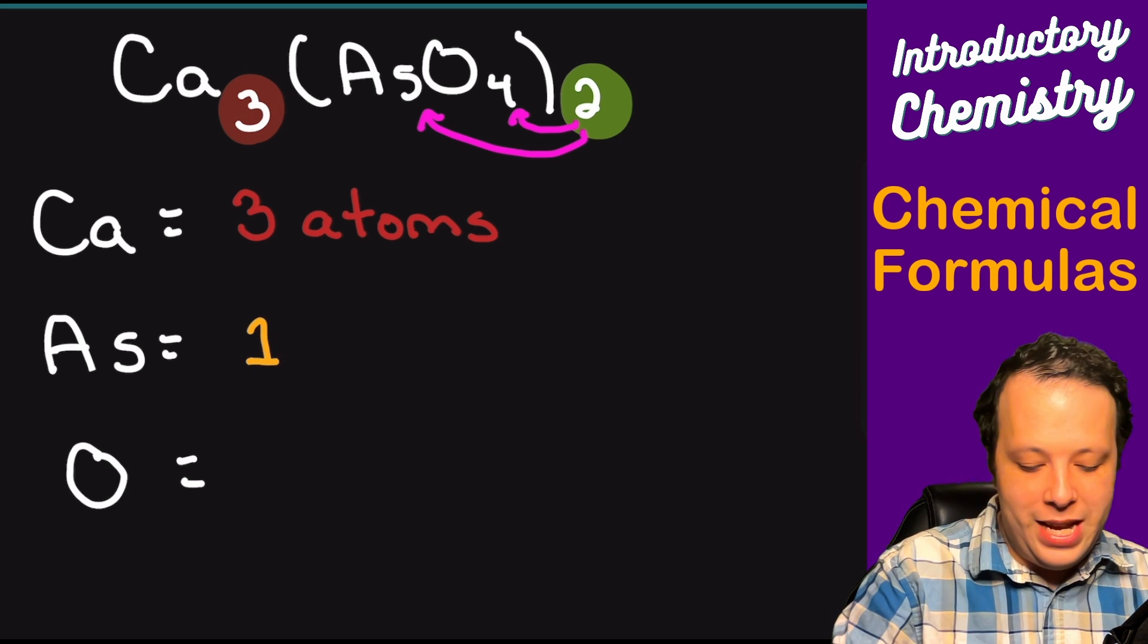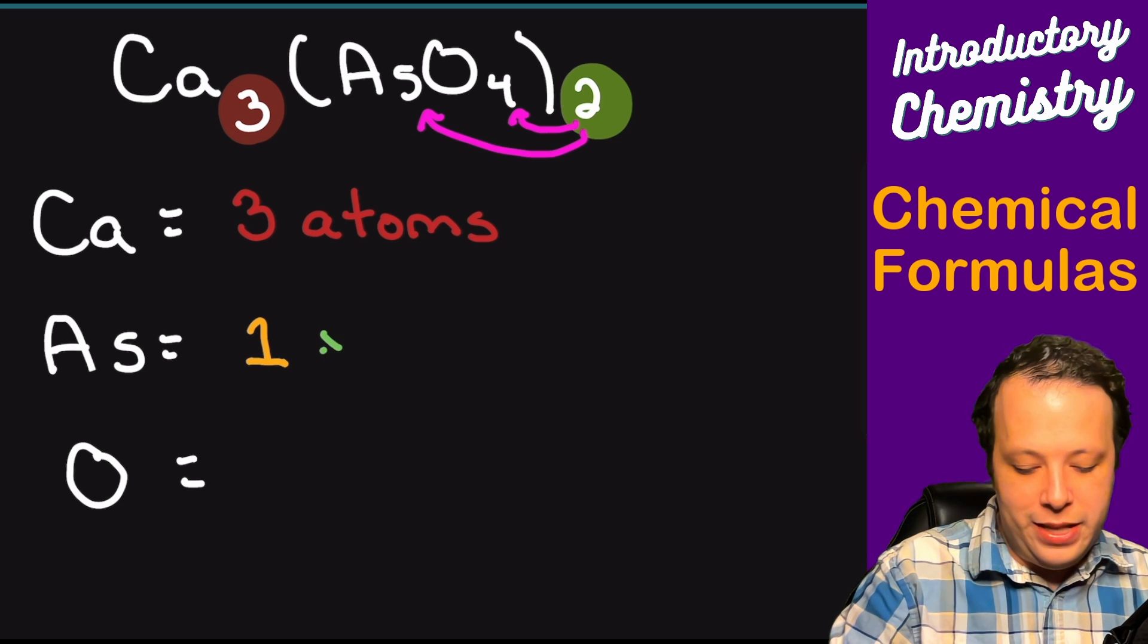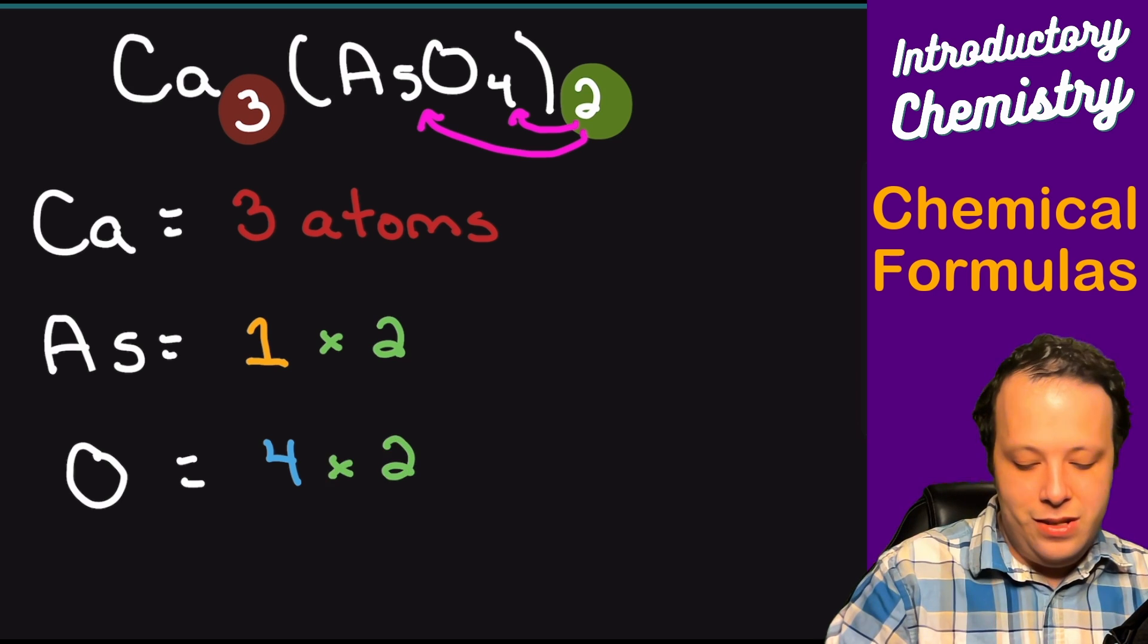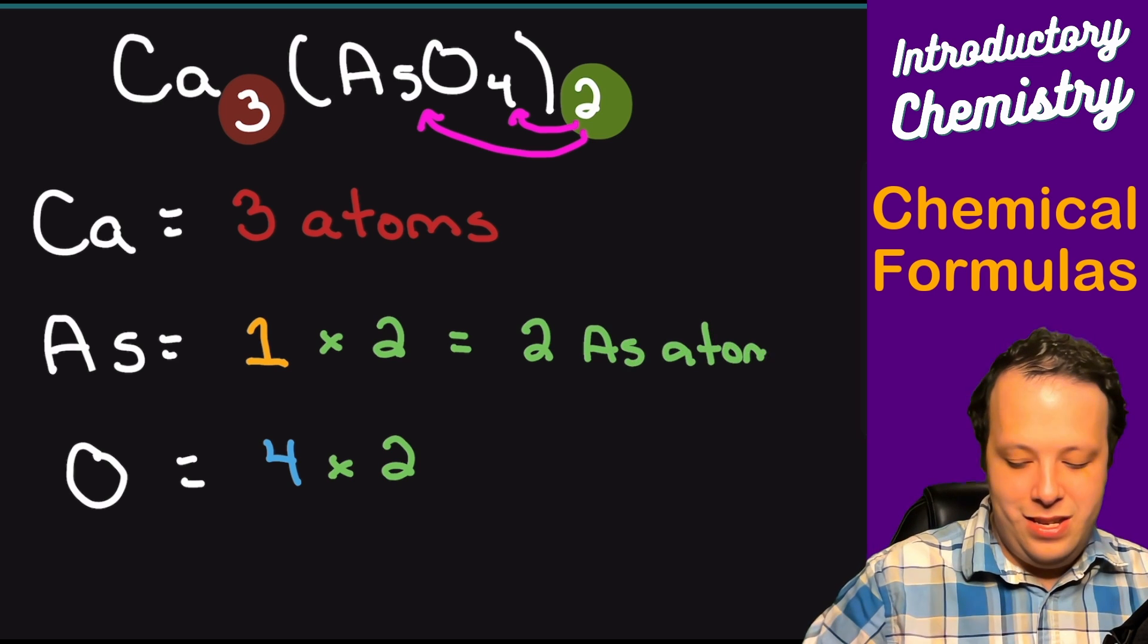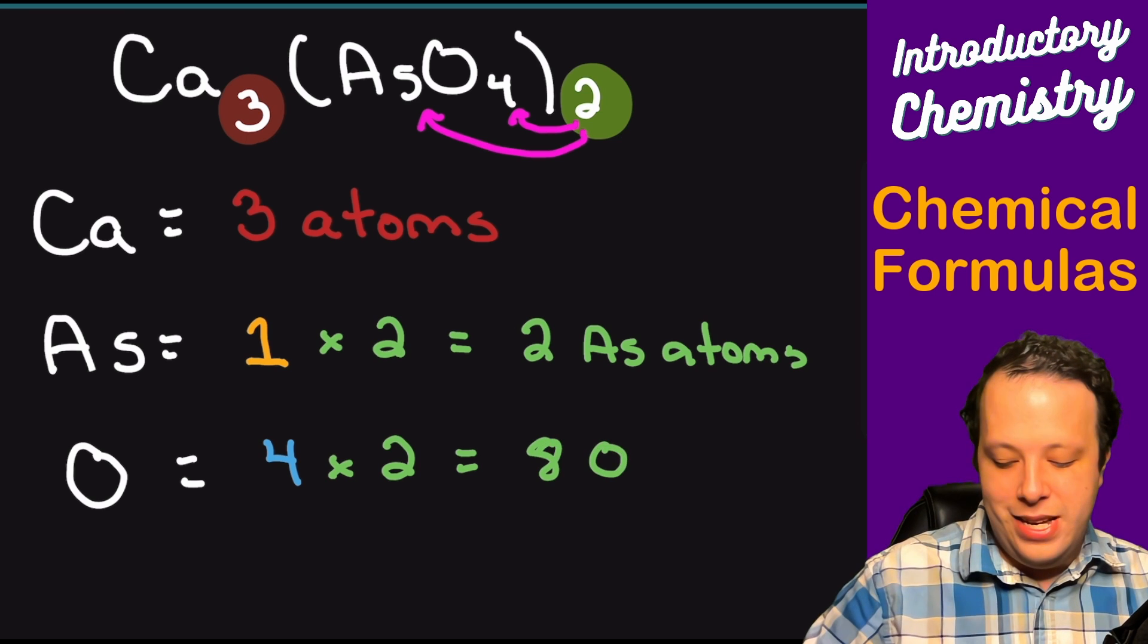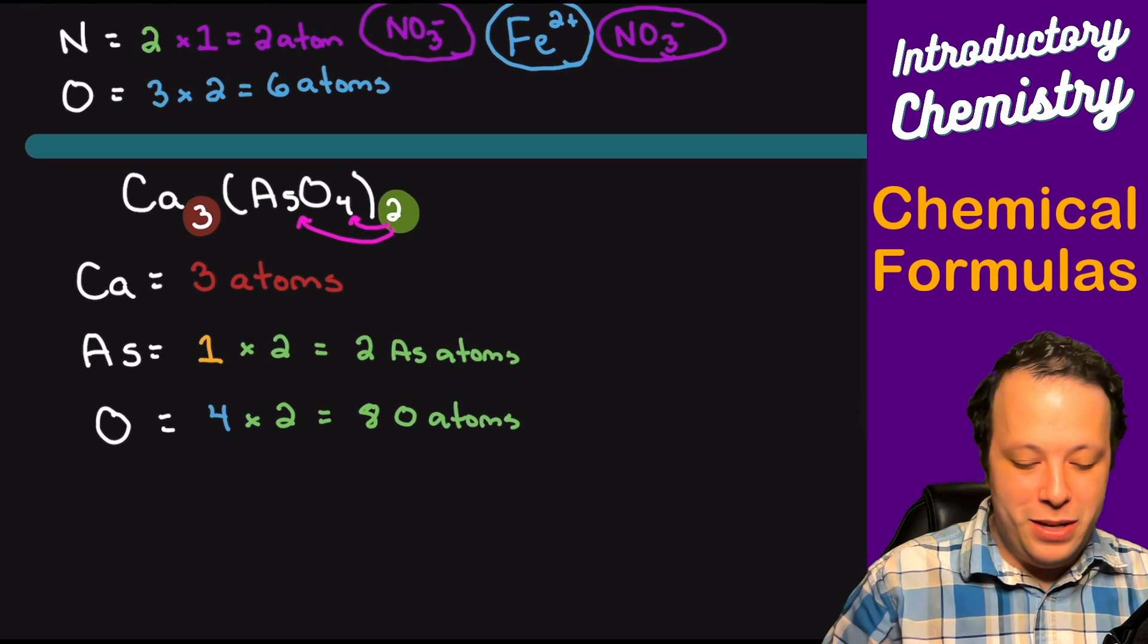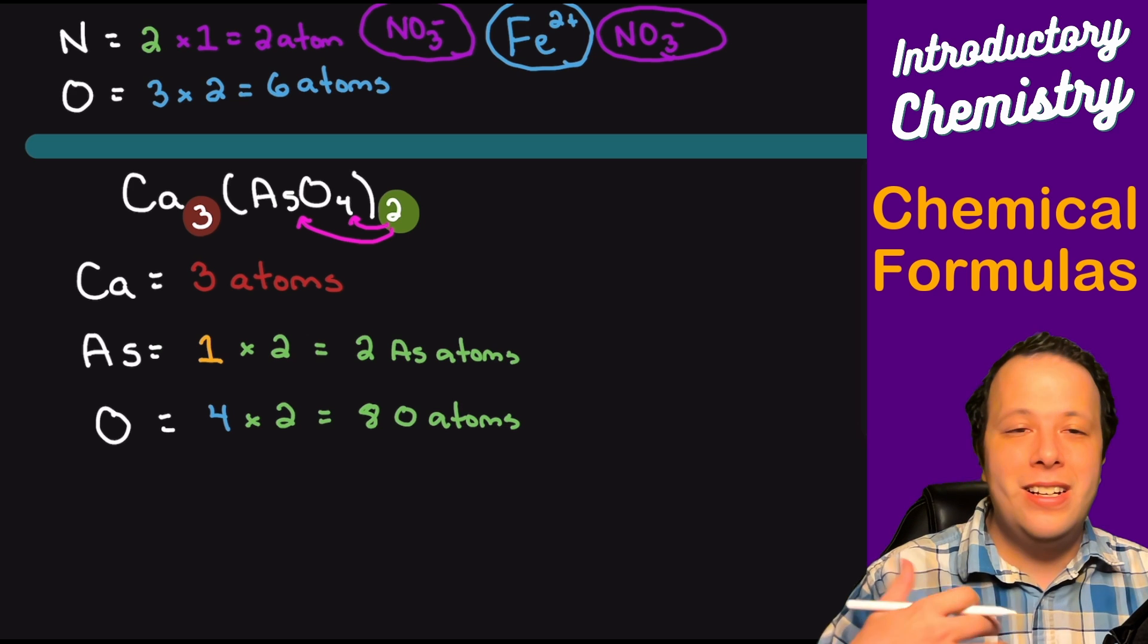So the first one is arsenate, which only has a one next to it, and we're going to multiply that by two. Oxygen has a four next to it, and we're also going to multiply that by two. And so we have two arsenate atoms and then eight oxygen atoms in this compound.